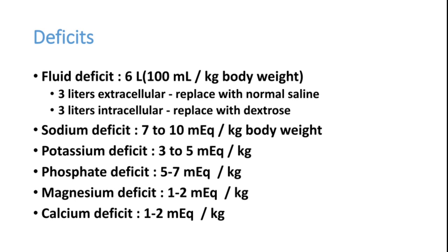Electrolyte deficits in DKA include: sodium deficit 7–10 mEq/kg, potassium deficit 3–5 mEq/kg, phosphate deficit 5–7 mEq/kg, magnesium deficit 1–2 mEq/kg, and calcium deficit 1–2 mEq/kg.